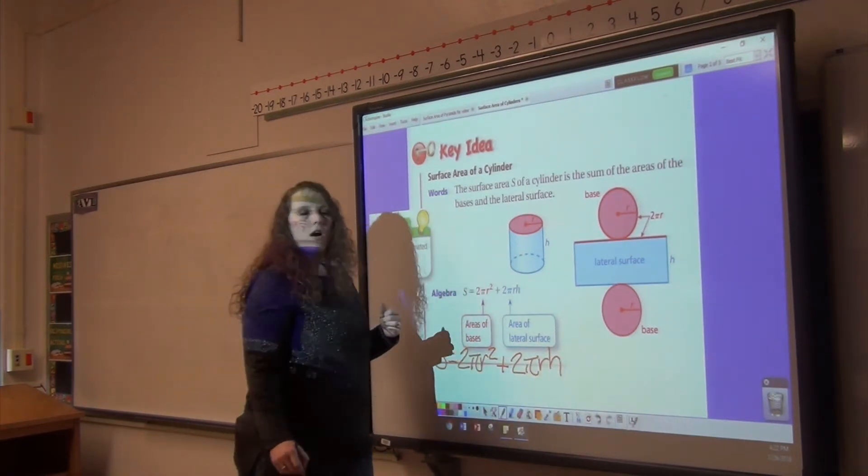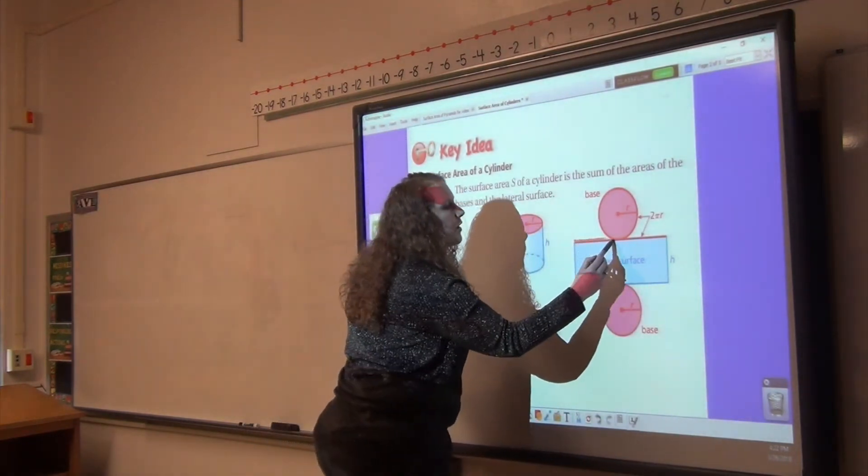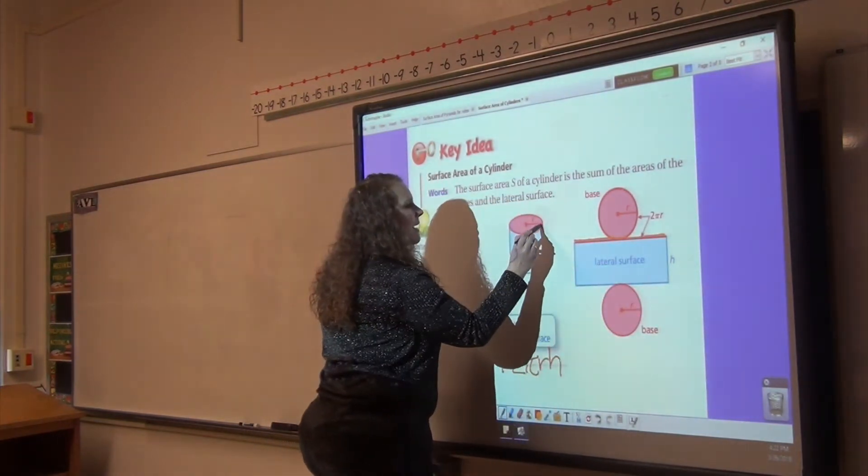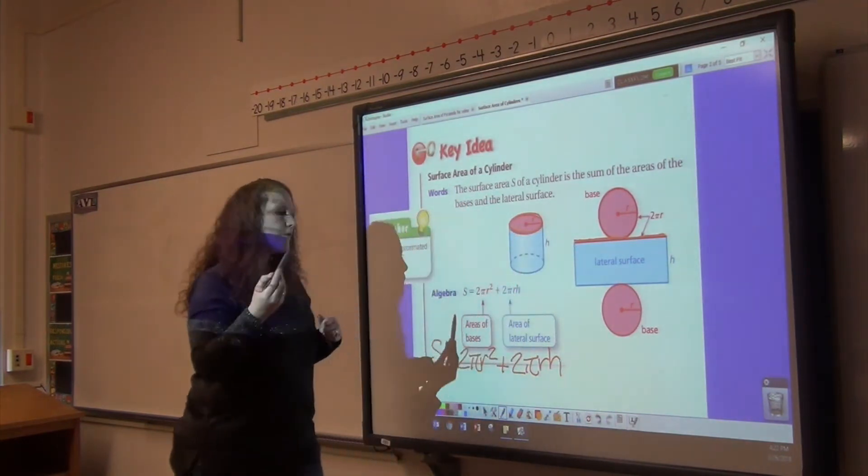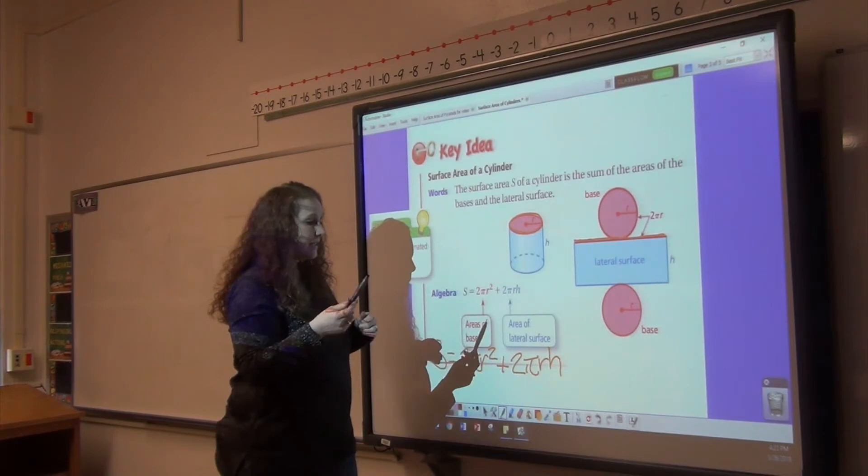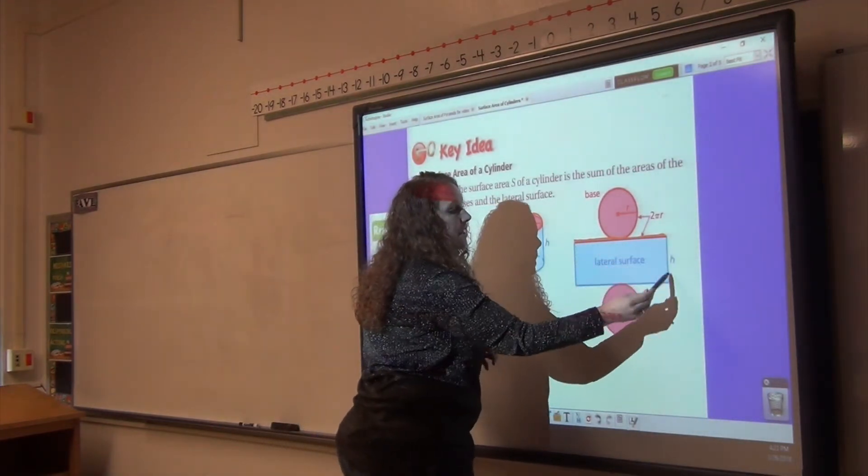2πr is the circumference around the circle. So this length here is the same as this length right here. It's just the circumference of a circle. And then we multiply it by the height. So it's this length times the height.